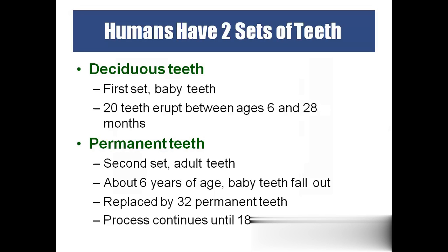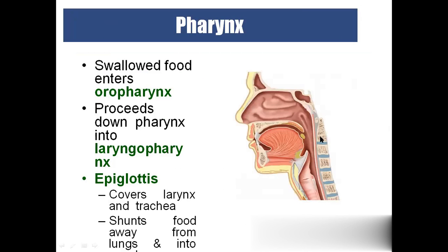Humans have two sets of teeth. Deciduous (baby) teeth — about 20 teeth — erupt and fall out between the ages of 6 to 28 months. Permanent teeth are the second set of 32 teeth that develop from around age 6 and continue until 18 to 20 years of age. After the teeth, the oral cavity continues into the pharynx.